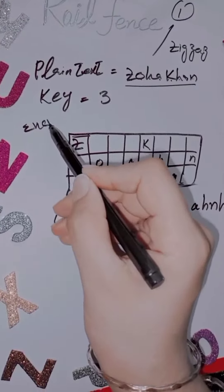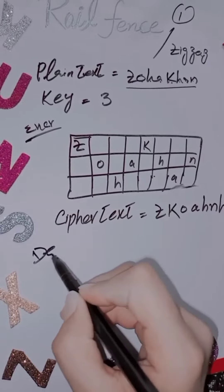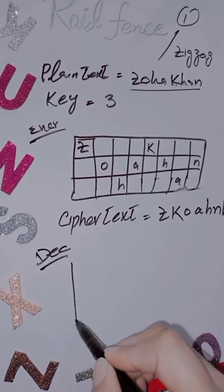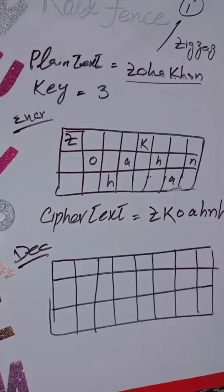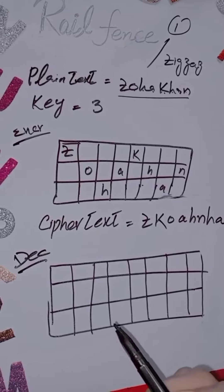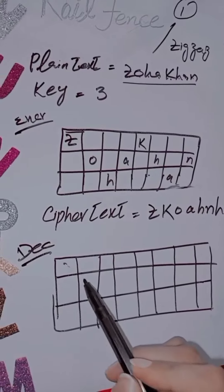And we have this encryption system. When we decrypt it, we get the same result. The table will be the same — when we decrypt it, we write it in zigzag way.